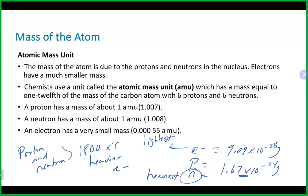Another mass unit used in chemistry is the atomic mass unit, AMU. It is defined as 1/12 the mass of the carbon-12 atom. A proton has a mass of about 1.007 AMU, a neutron is slightly heavier at about 1.008 AMU, and the electron is much, much smaller. You need to know that neutrons are the heaviest, followed very closely by protons, with electrons being the lightest of the three.